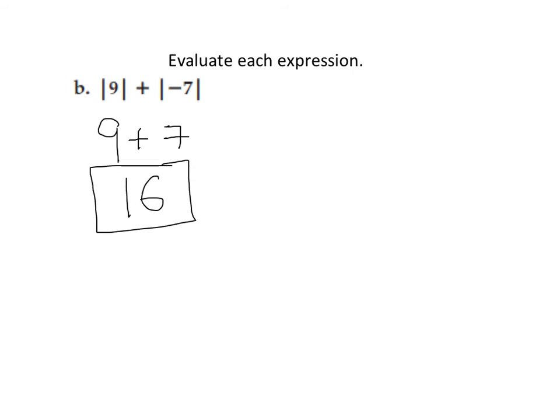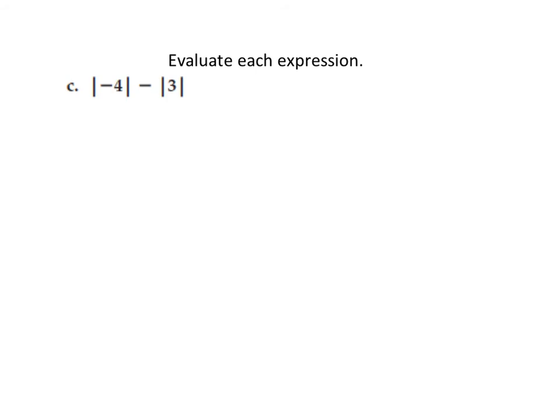We're also going to evaluate expression C: the absolute value of negative 4 minus the absolute value of 3. For negative 4, the distance from 0 is 4 spaces — distance is always positive. The subtraction sign is outside both absolute values, so it stays. Then the absolute value of 3 — the distance 3 is from 0 is 3 spaces, positive. Now we do 4 minus 3, which equals 1.